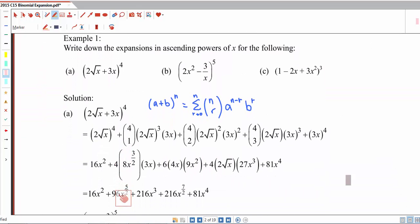Write down the expansions in ascending powers of x for the following. For part a, 2 square root x will be a and 3x will be our b. So 4 over here will be n. If we apply our binomial formula, this is what we'll get.